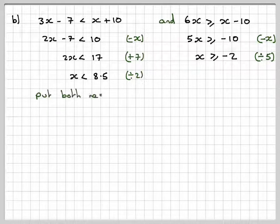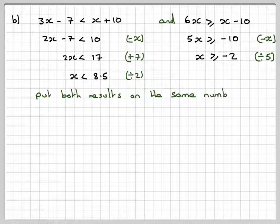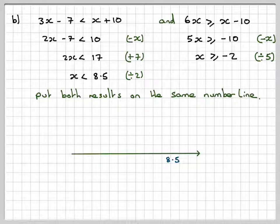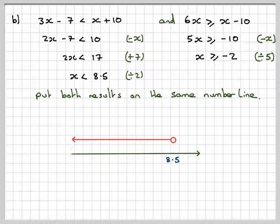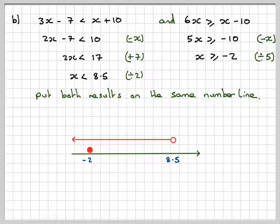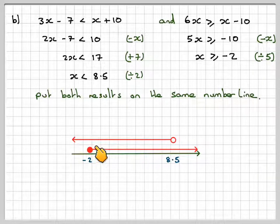Now draw them on the same number line but separately. 8.5 gets an open circle because it's not equal to, and the line goes this way because we want less than 8.5. Then minus 2 gets a full circle because it's equal to, and greater than, so it goes that way.